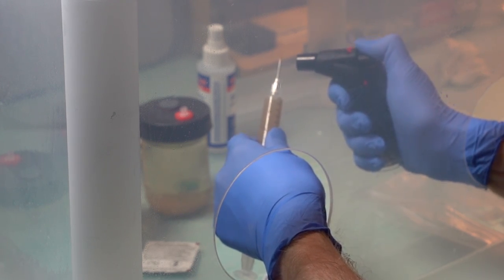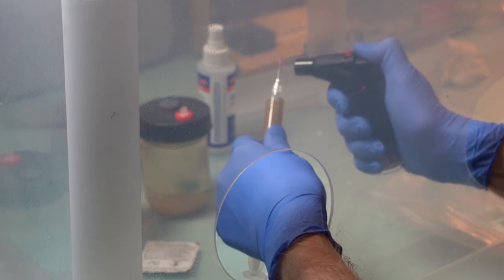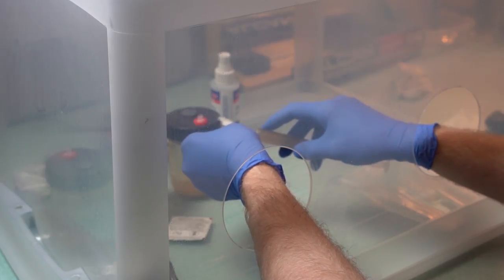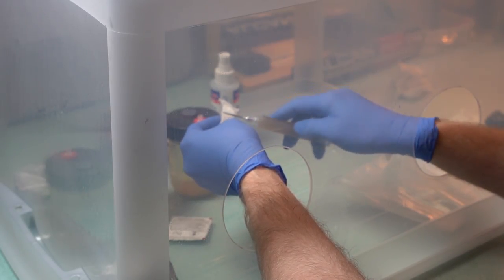When flame sterilizing, hold the needle to the flame until the tip of it becomes glowing red. Cool the needle before inoculating with the syringe.